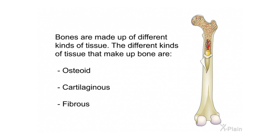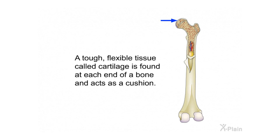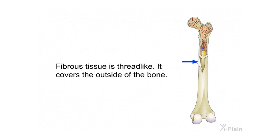Bones are made up of different kinds of tissue: osteoid, cartilaginous, and fibrous. Osteoid tissue is compact — it forms the hard outer layer of bone. A tough, flexible tissue called cartilage is found at each end of a bone and acts as a cushion. Fibrous tissue is thread-like and covers the outside of the bone.